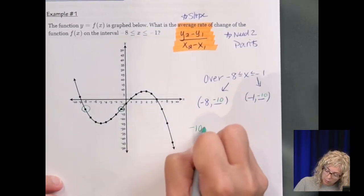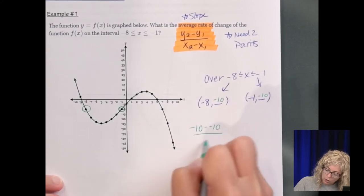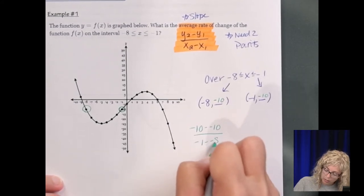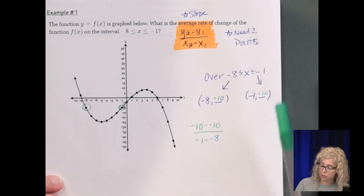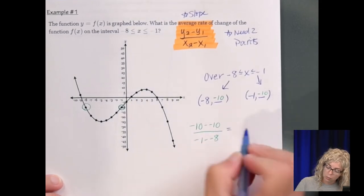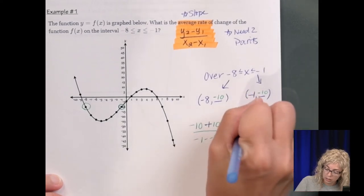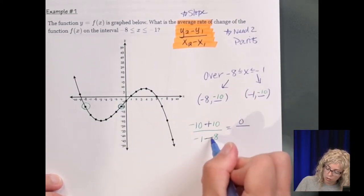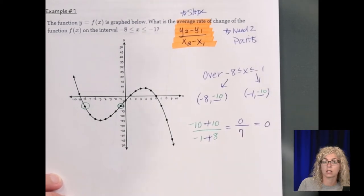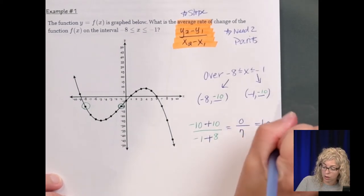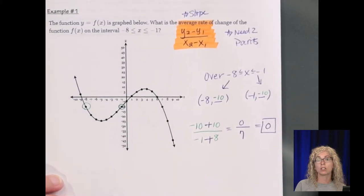So something should happen. So in calculating the slope, it'd be negative 10 minus negative 10 over negative 1 minus negative 8. So subtract the y, subtract the x's. Well, when I subtract something from itself, or when you subtract a negative positive, we get 0. So this is 0 over 7, which is 0. So our average rate of change is 0.